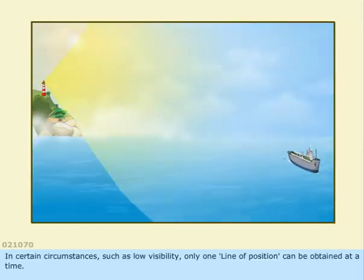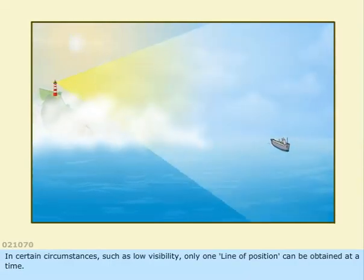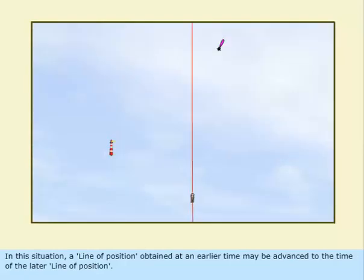In certain circumstances, such as low visibility, only one line of position can be obtained at a time. In this situation, a line of position obtained at an earlier time may be advanced to the time of the later line of position.